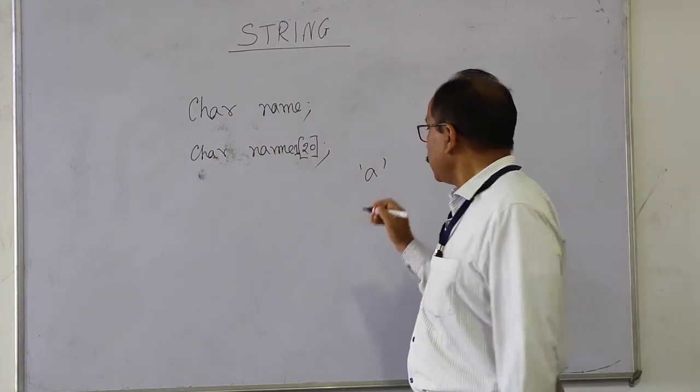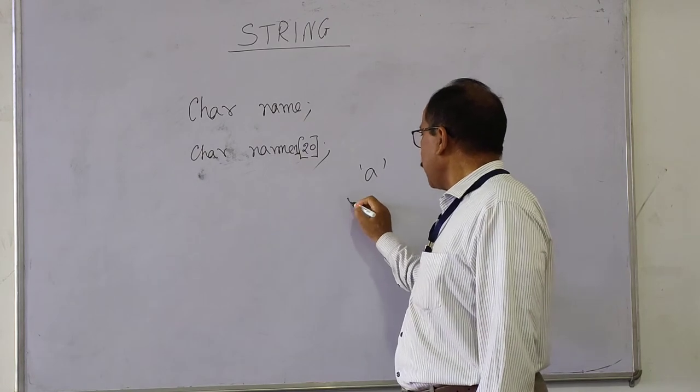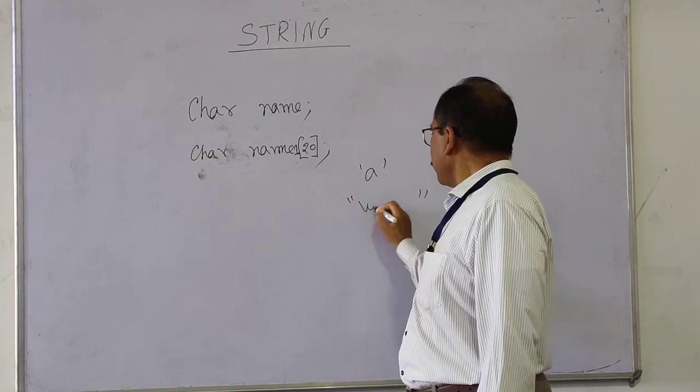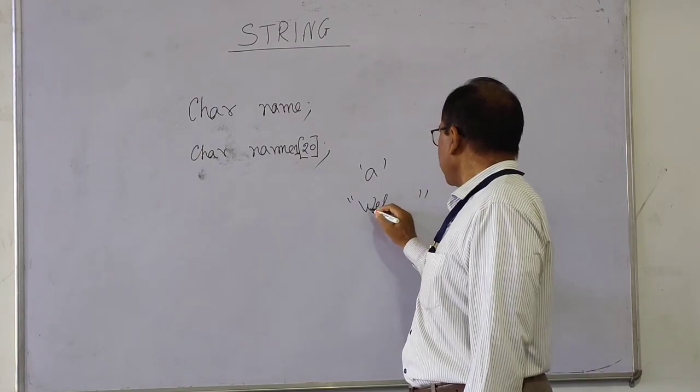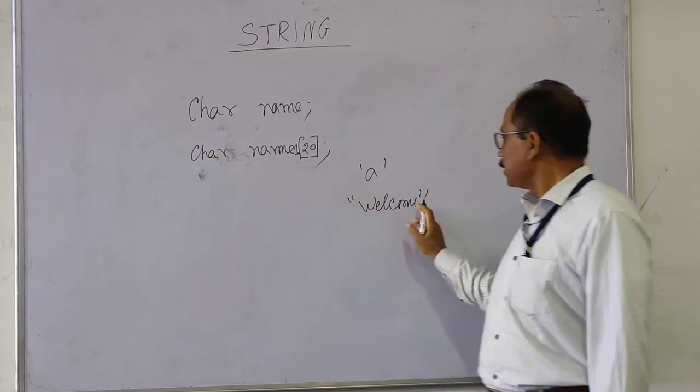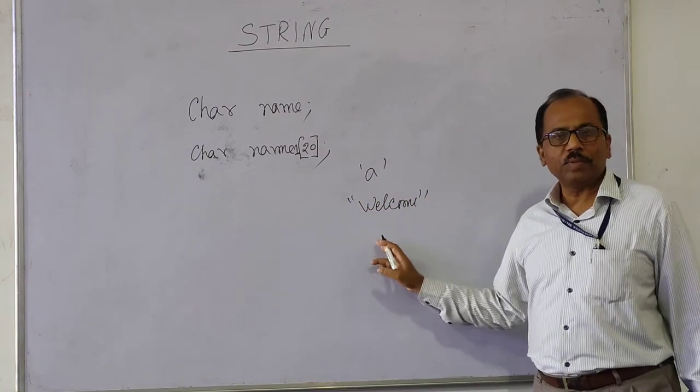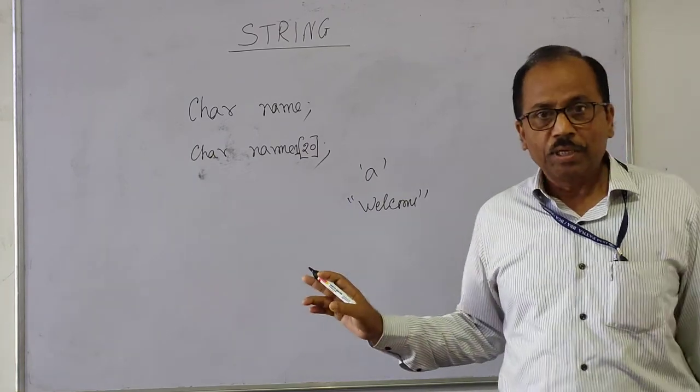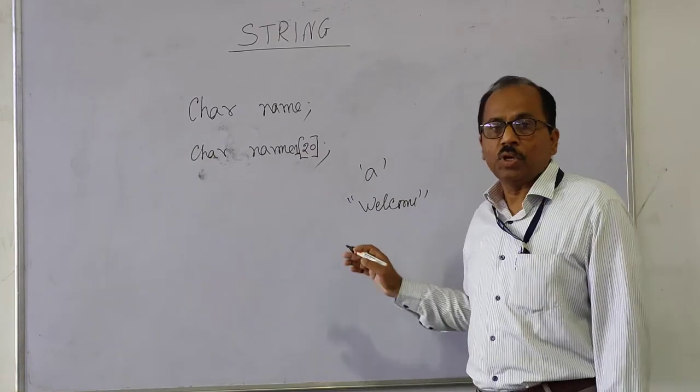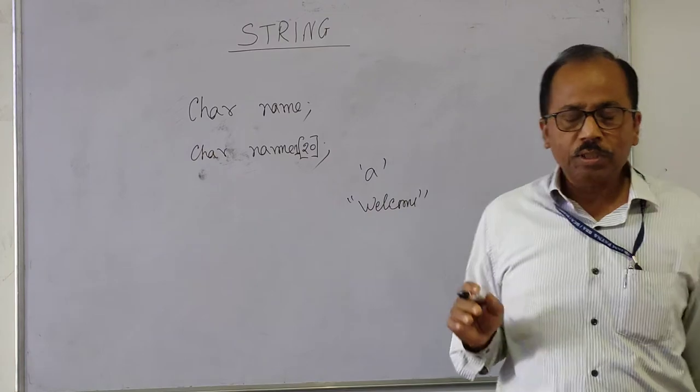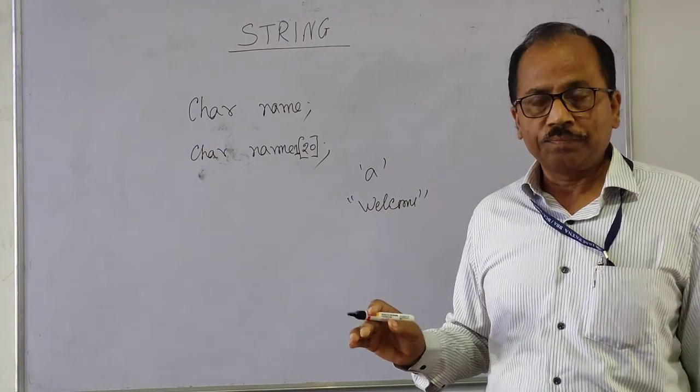Whereas to write a string constant, we use double quotation marks. If we write "A", this is a string constant. So this is how we differentiate between string constants and character constants.